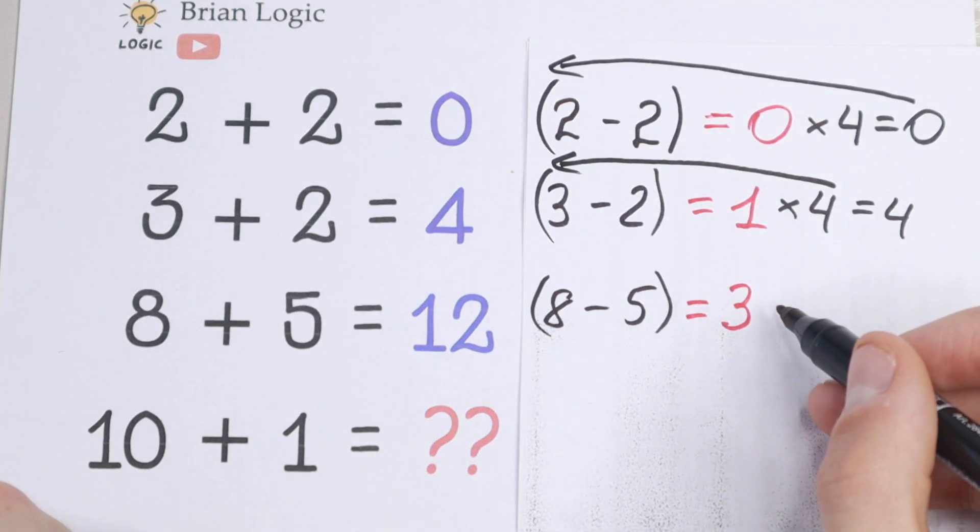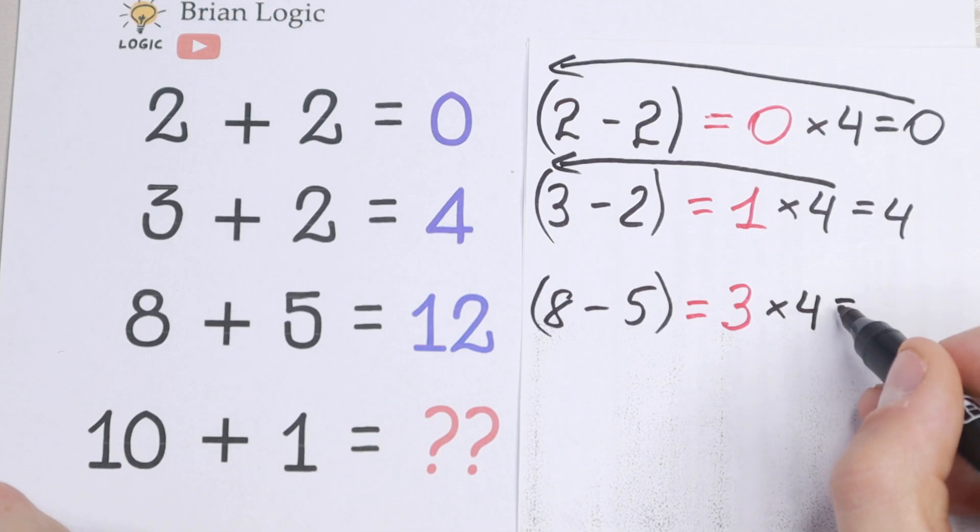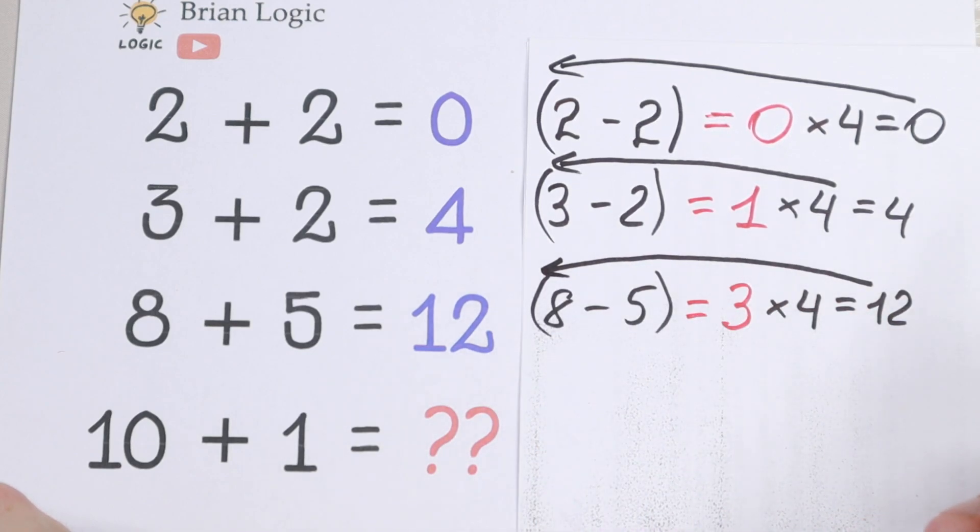So the same number as right here. And if we multiply this 3 by 4, we will have 12. As you can see,